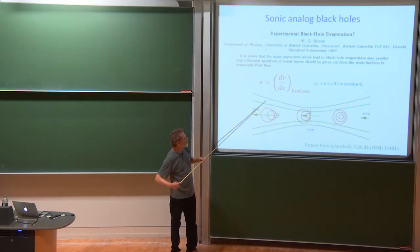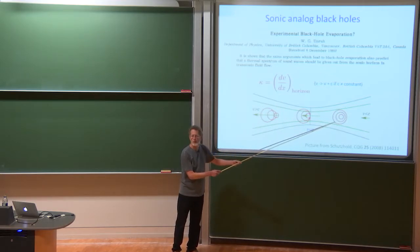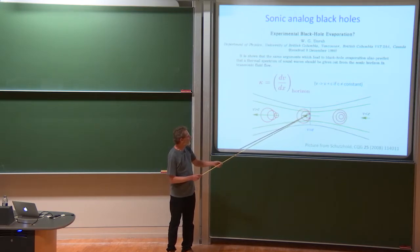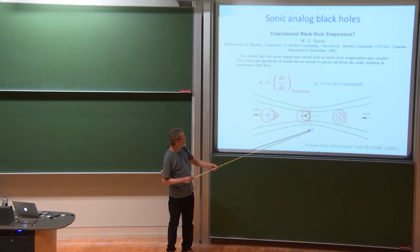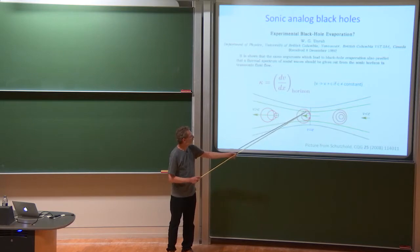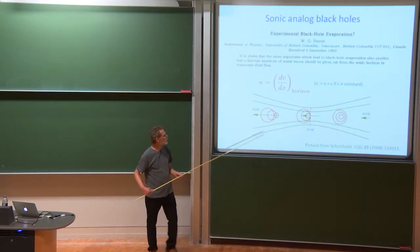So here's a cartoon of that from a paper by Ralph Schutzhold. Here's fluid flowing from right to left. These circles represent the wave fronts of sound waves. And here's the place where the fluid flow velocity matches towards the left, matches the speed of sound in the fluid. So sound to the left of this midpoint cannot propagate past the midpoint to the right. So this acts like a horizon in the fluid flow.